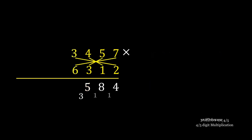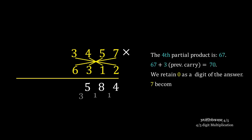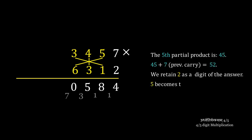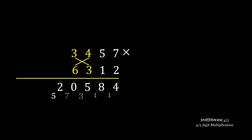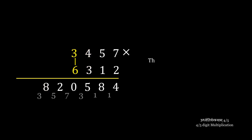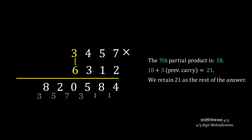The fourth partial product is a cross-multiplication of all digits: 67. Plus the previous carry gives us 70. We retain 0 as a digit of the answer and 7 becomes the next carry. The fifth partial product is a cross-multiplication of the first three digits, which gives us 45. We add the previous carry to get 52. We retain 2 as a digit and 5 becomes the next carry. The next partial product is 6 times 4 plus 3 times 3. We add 5, the previous carry, to get 38. We retain 8 and 3 becomes the next carry. The final partial product is 3 times 6. We add the previous carry to get 21, and we retain that as the rest of the answer. Again, we have accomplished a four-digit multiplication.